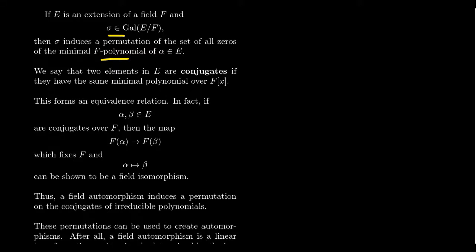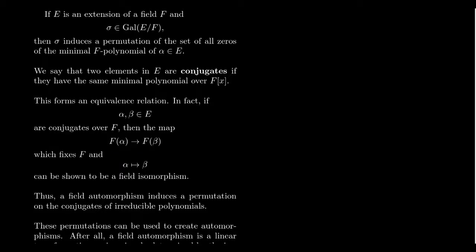Being conjugates of the same minimal polynomial gives you an equivalence relation. So suppose alpha and beta are elements in E that are conjugates over some polynomial in F. Then there is an isomorphism from the field F adjoined alpha to the field F adjoined beta — and this is the isomorphism induced by the map alpha maps to beta. One can prove this is an isomorphism, and it comes from the fact that the two elements satisfy the same minimal polynomial.